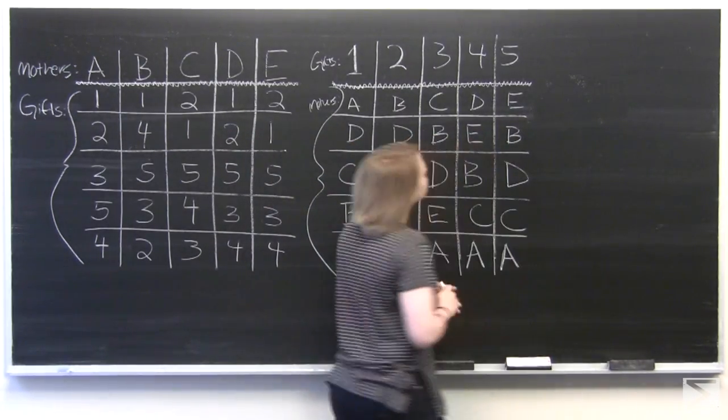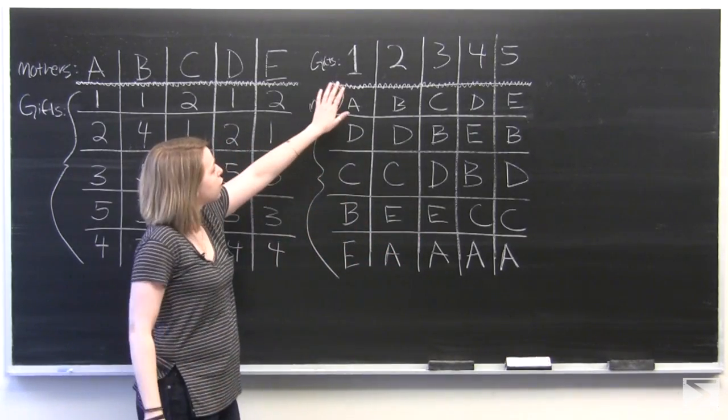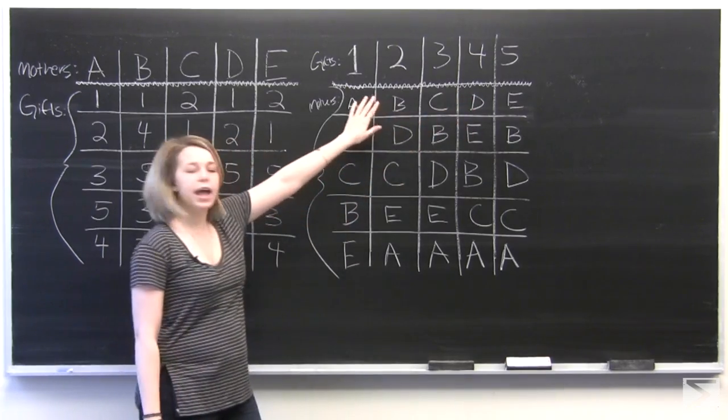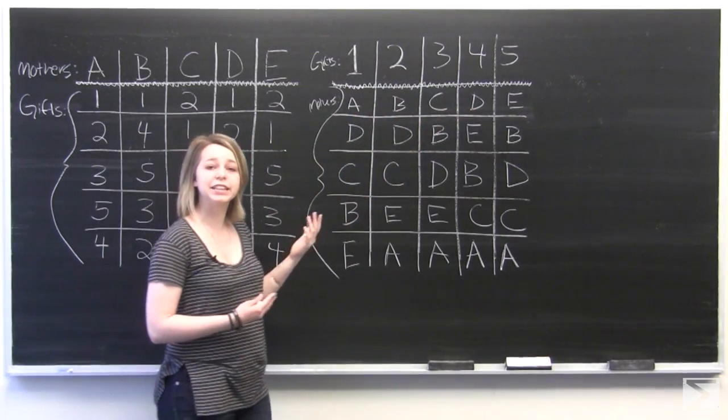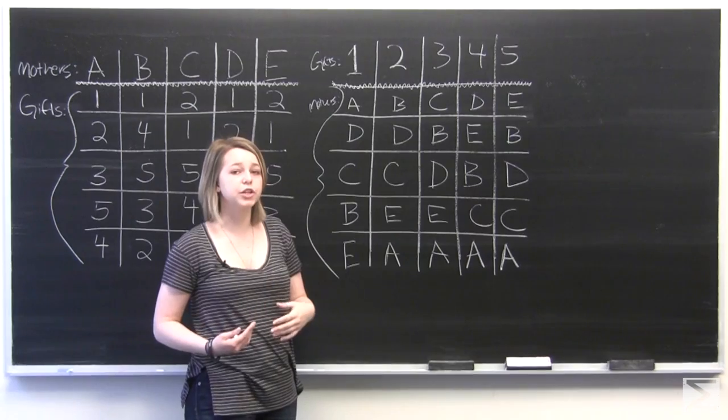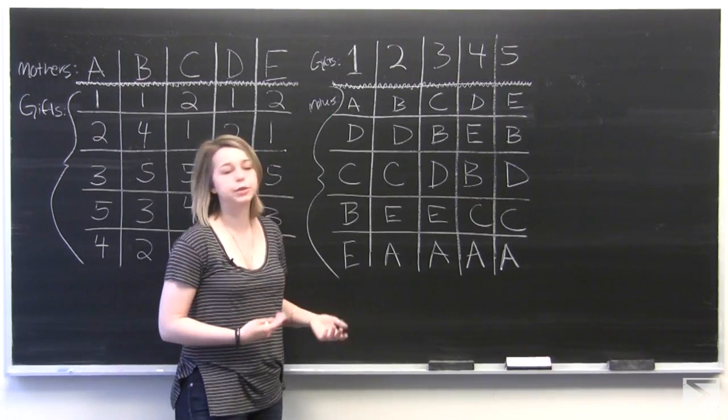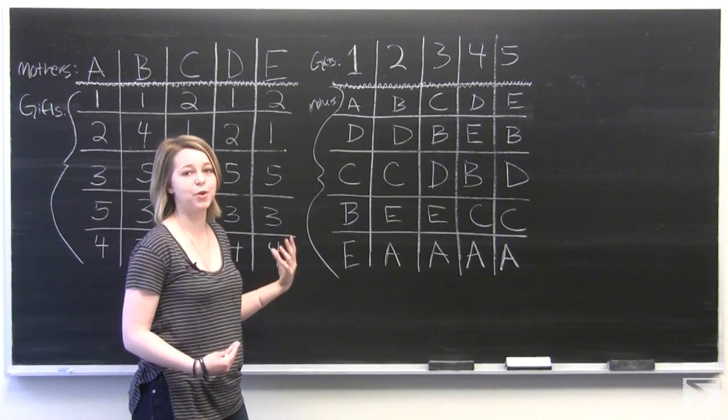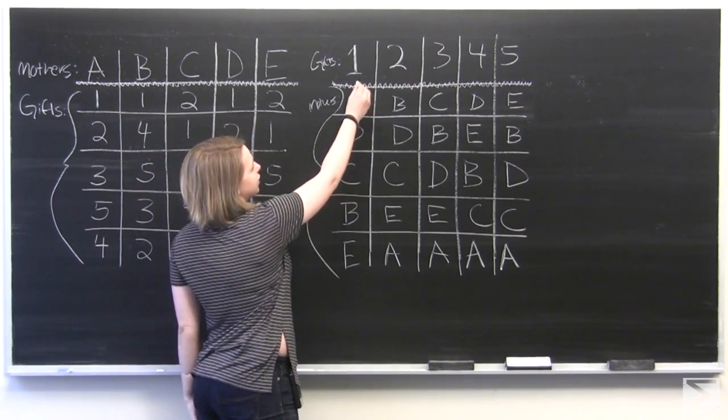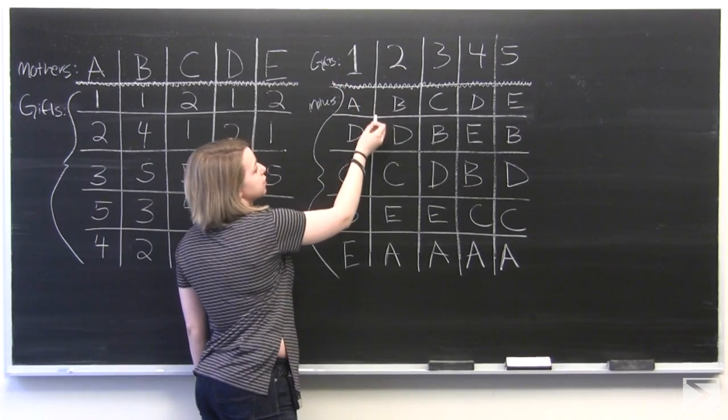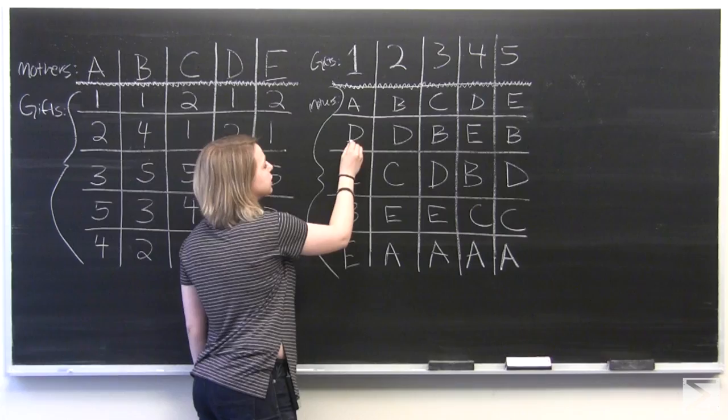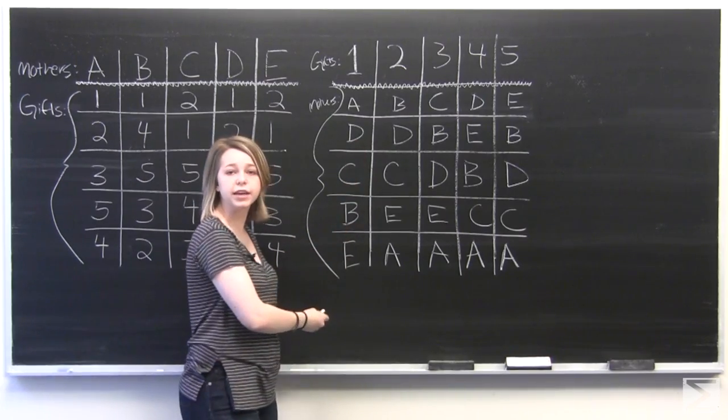And then the children have also ranked their preferences. So we've got our gifts number one, two, three, four, and five. And each kid would ideally like their gifts to go to their mother first, but they're willing to rank the other mothers in case their mother wants something different. So gift number one, for example, is going to Mother A ideally. But then it would go to D, C, B, or E afterwards.